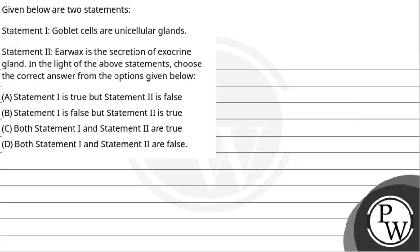Hello, let's see the question. The question says given below are two statements. Statement one says goblet cells are unicellular cells. Statement two says earwax is the secretion of exocrine gland. In the light of the above statements, choose the correct answer from the options below. So we will tell which statement is correct and which is wrong, either both are right or both are wrong.